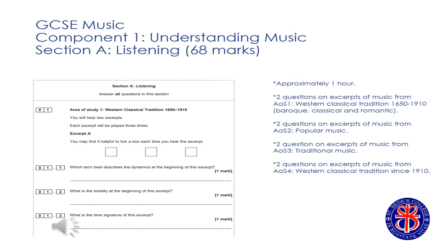The first section of the exam paper features questions on unfamiliar pieces of music. Students have to answer eight sets of questions in relation to the four areas of study, which include the Western classical tradition, popular music, traditional music and the Western classical tradition since 1910. Section A of the exam paper lasts for approximately one hour. Recordings of the music are played in the exam hall and students move through each question in turn.